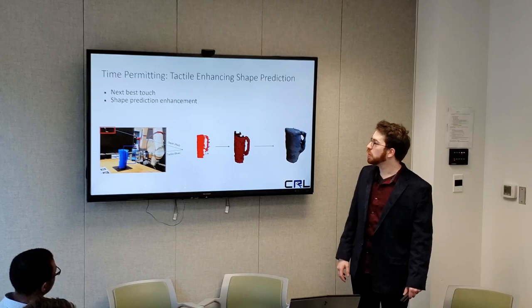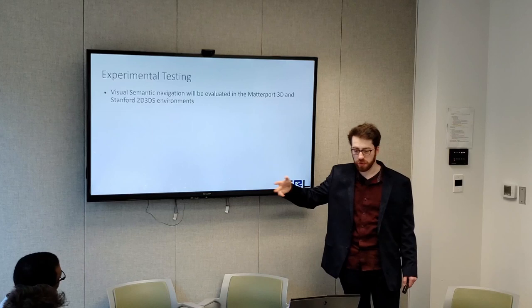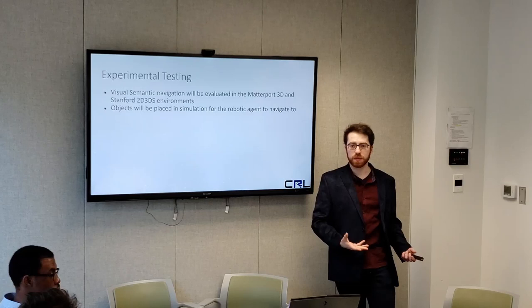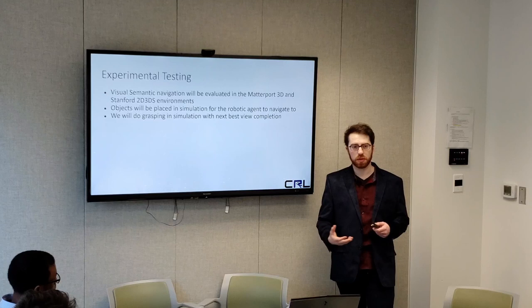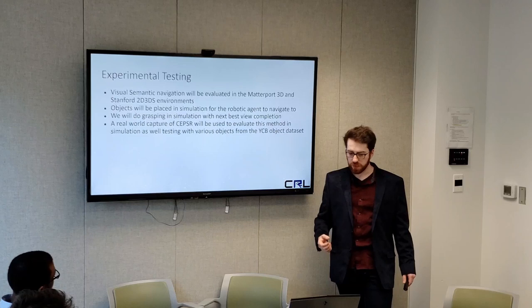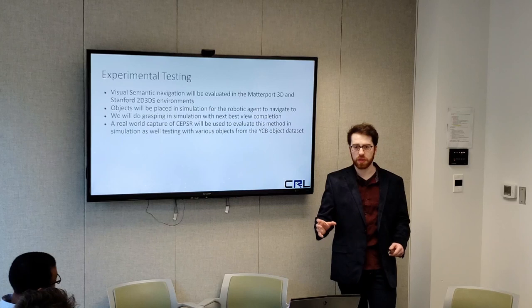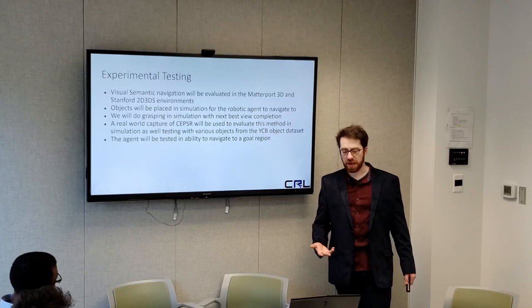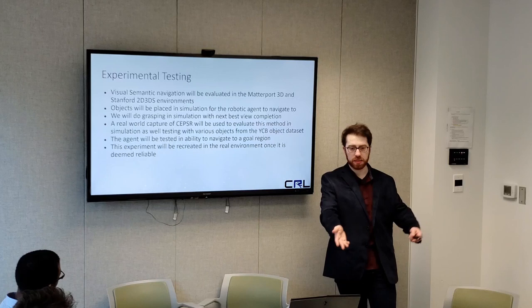For experimental testing and validating the entire process: I will test visual semantic navigation in the Matterport 3D and Stanford 2D-3DS datasets. Objects from the YCB and GRASP database will be placed in simulation. The robot will navigate to those objects, do grasping in simulation, and determine all the quality metrics described. I'll capture a real environment — Sepser most likely — evaluate in simulation by placing objects there, test navigation to the goal region, and once the metrics look reliable enough, recreate the simulated experiment in the real world where the robot navigates to a room and picks up something on the table.